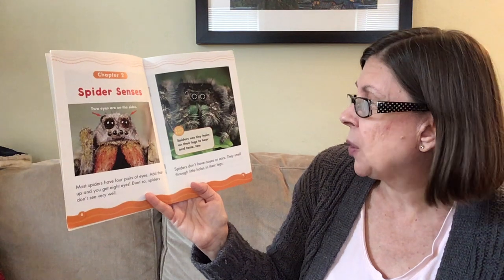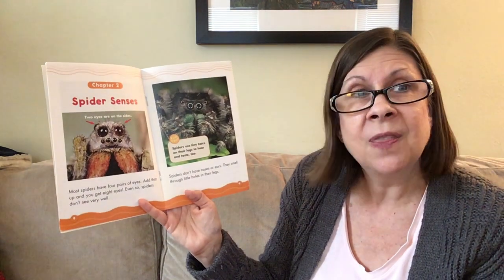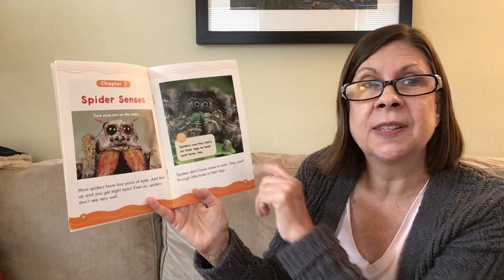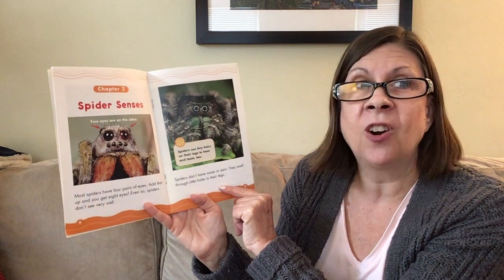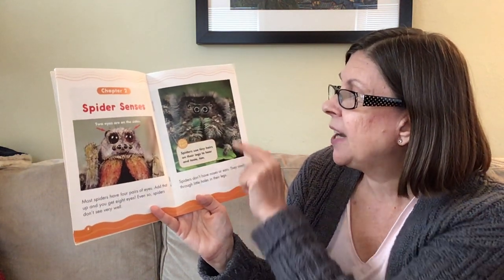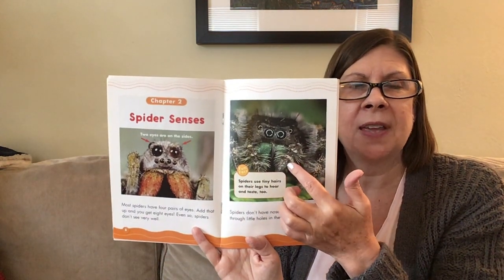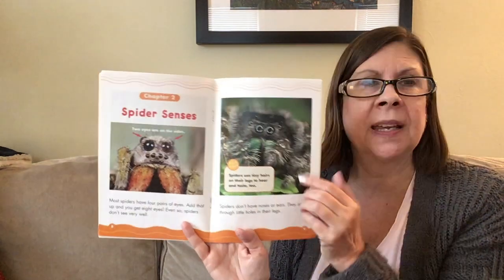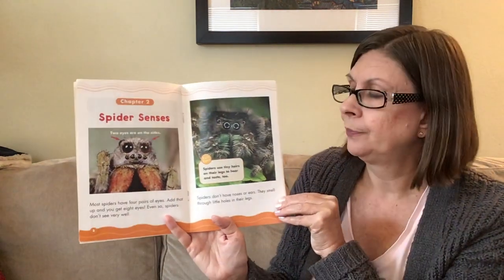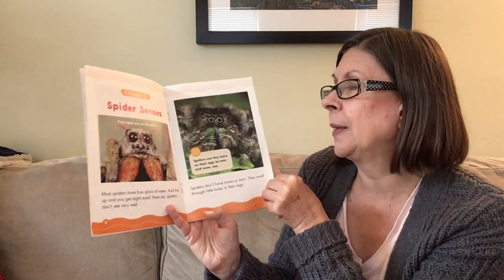Spiders don't have noses or ears. They smell through little holes in their legs, so they smell with their eight legs because they have little holes there instead of a nose on their head. Spiders also use tiny hairs on their legs to hear and taste too. They have holes on their legs for smelling and hairs on their legs for tasting and hearing — they really use their legs!